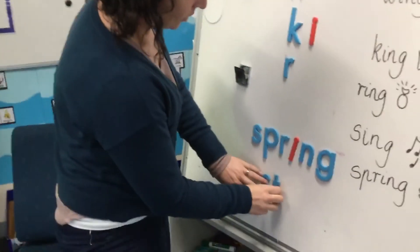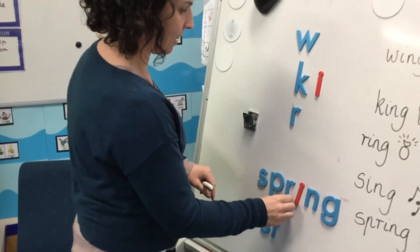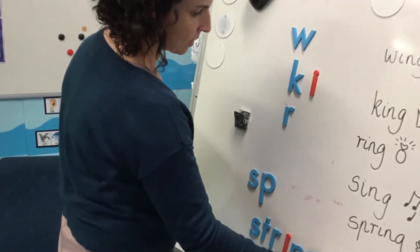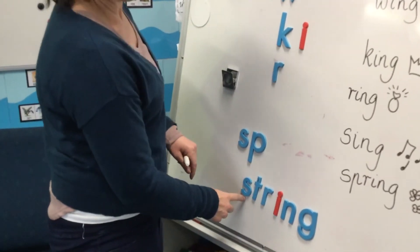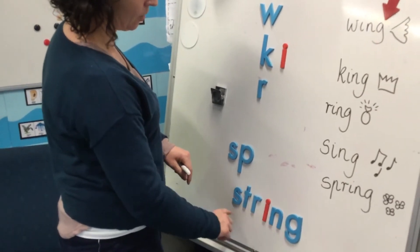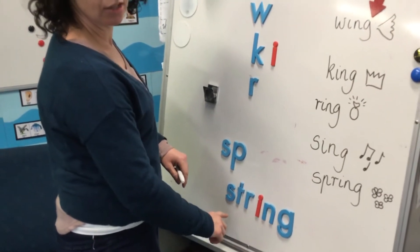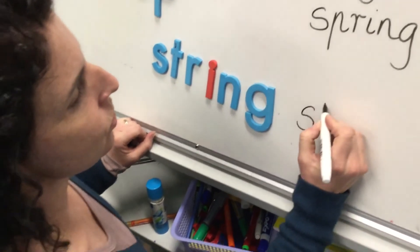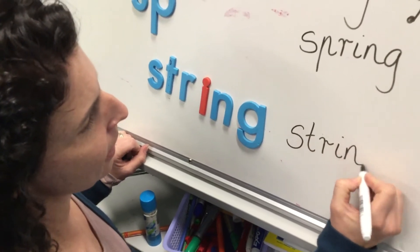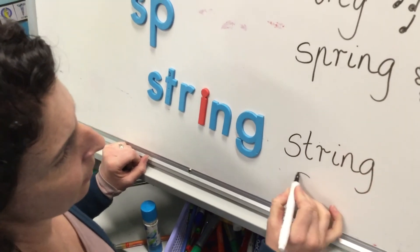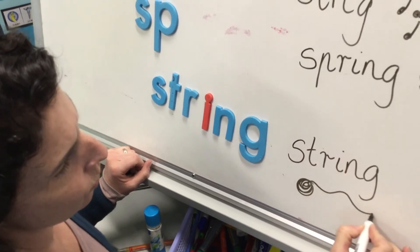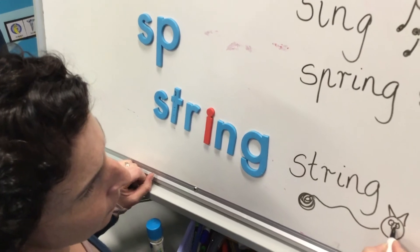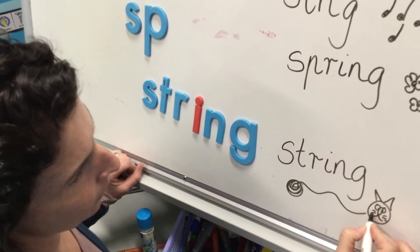Alrighty, and we've got another blend down here. I'm going to bring my R down. We're still working with ING. Thank goodness because this is challenging. We've got a different blend at the beginning. ST-R-ING. String, string. Ooh, there we go. So ST-R-ING. And there's my ball of string for my little cat to play with. There we go.